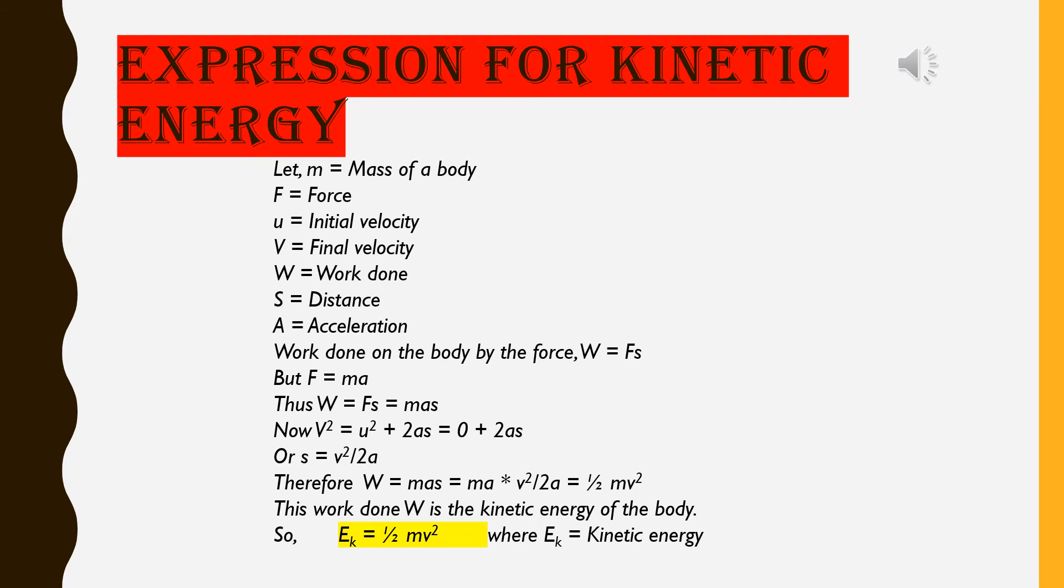But from the second law of Newton, we get F is equal to M into A. Therefore, instead of F, we can write M into A. So, W is equal to F is equal to MAS.